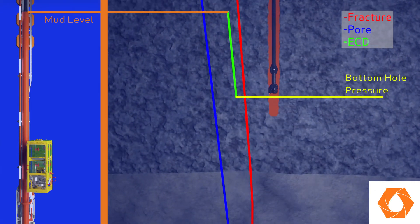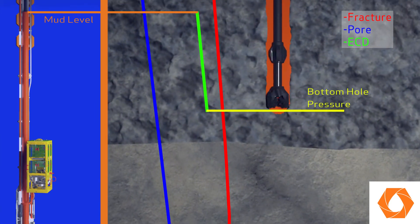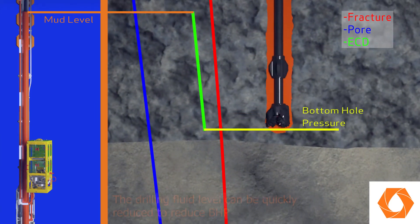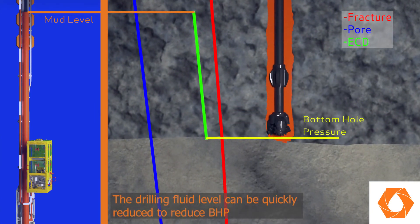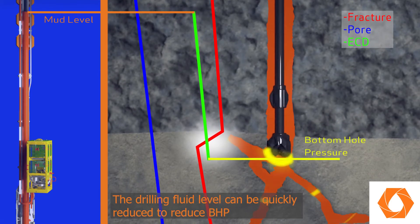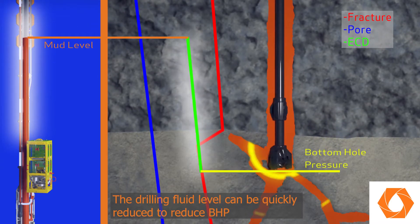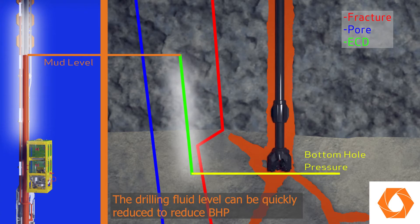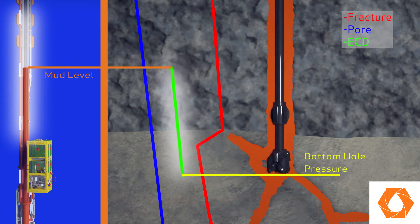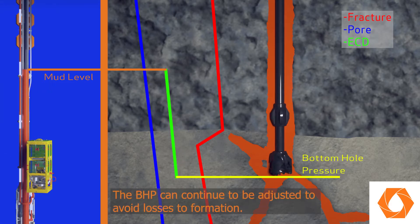By controlling the drilling fluid, EZDrill can quickly reduce the bottom hole pressure if sudden losses to the formation occur. If a depleted zone or natural fracture is drilled into, the bottom hole pressure can be reduced to below the fracture pressure within minutes. Drilling can safely continue without losses to the formation.